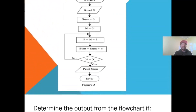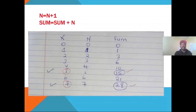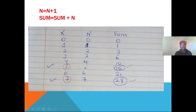Basically, what we are doing is bringing the new value of Sum and the new value of N into each iteration, then computing. When you reach the decision point, you check whether the condition is true or false. If false, you key in new values and repeat the calculation. Our answers are 15 when X=5, and 28 when X=7.